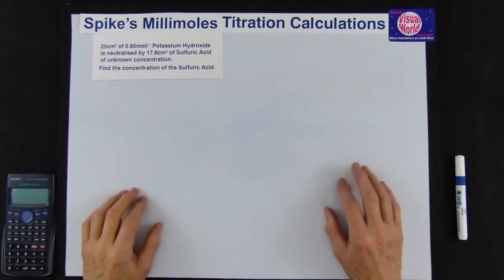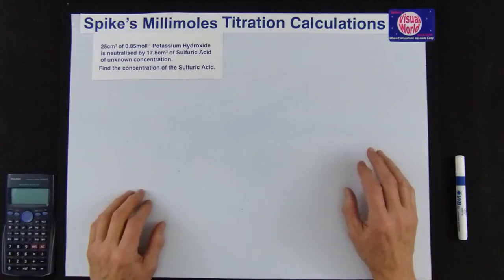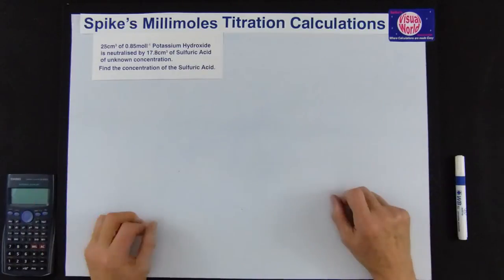All you need to do is find out how many H+ in the acid formula and how many OH- in the alkali formula. Then you just have a simple calculation and you get your answer.